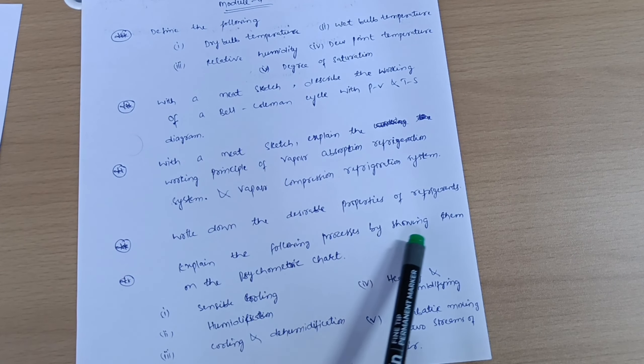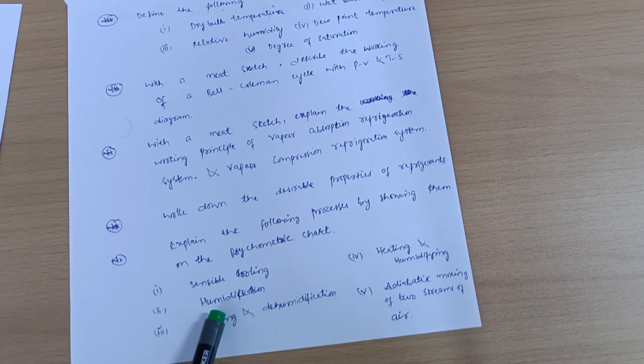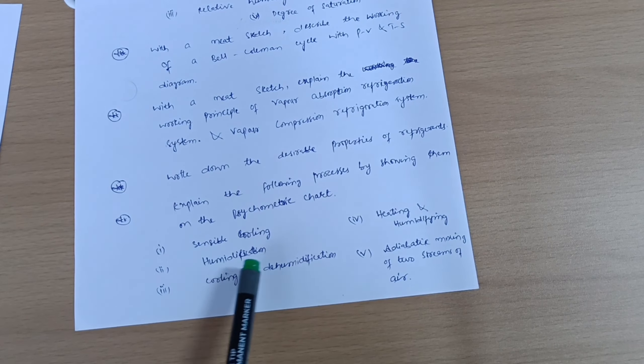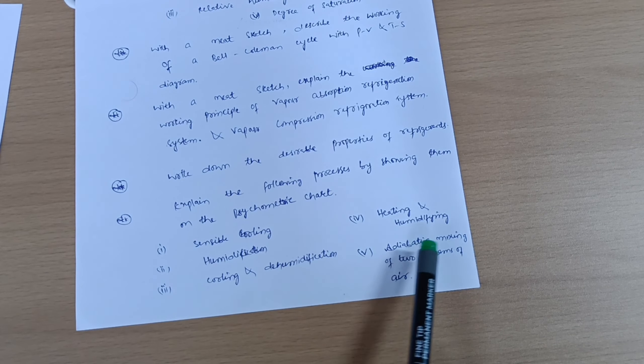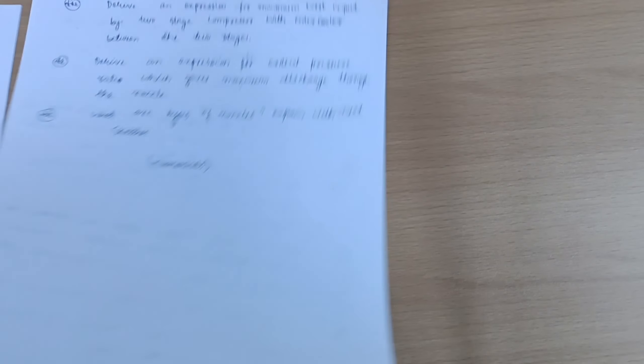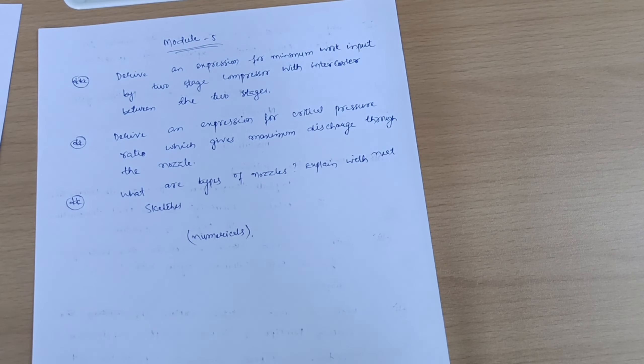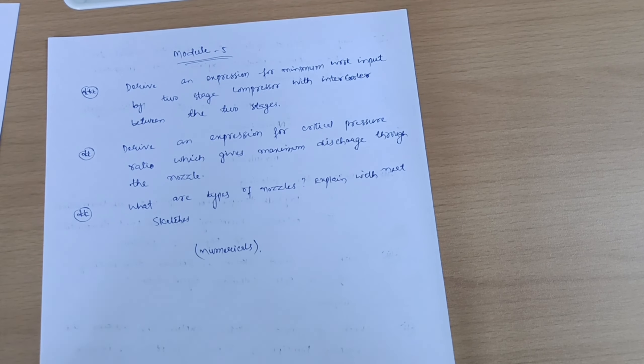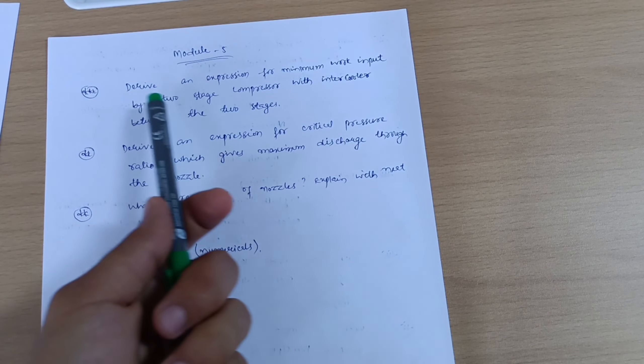And we have here the desirable properties of refrigerants - this may be a six marks question. Explain the following processes by showing them on the psychrometric chart: that is sensible cooling, humidification, heating and humidifying, cooling and dehumidification, adiabatic mixing of two streams of air. So this is all about Module 4.